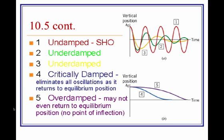If something is critically damped, that means the oscillation does not fully occur. Rather, it will go to its maximum position and then just slowly return to the equilibrium point. If something is over-damped, however, it may not even return back to the equilibrium position and may just become offset to a new position.